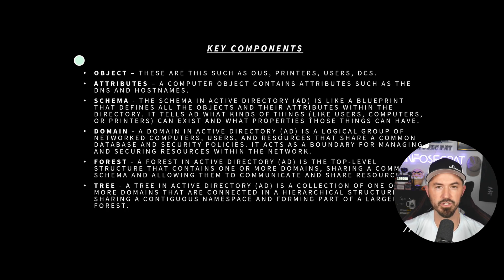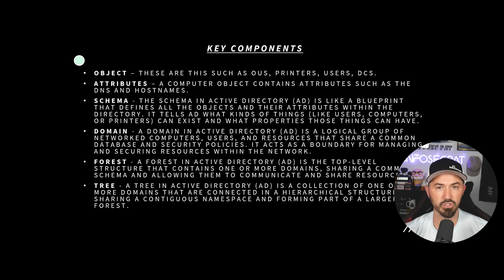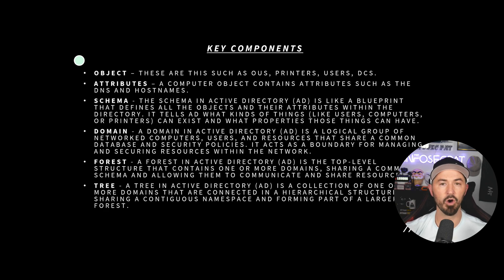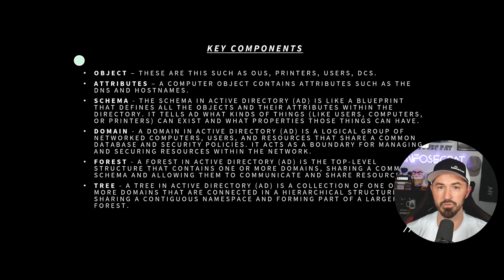I know my big head is in the way, so I'll have to read off to you guys for those last couple words. But the key components of AD are so critical for you to understand before you even start attacking it. So we have an object — these are OUs (organizational units), printers, users, DCs or domain controllers, computers, etc. These are all different kinds of objects. The next one is attributes — a computer object contains attributes such as a hostname or DNS.